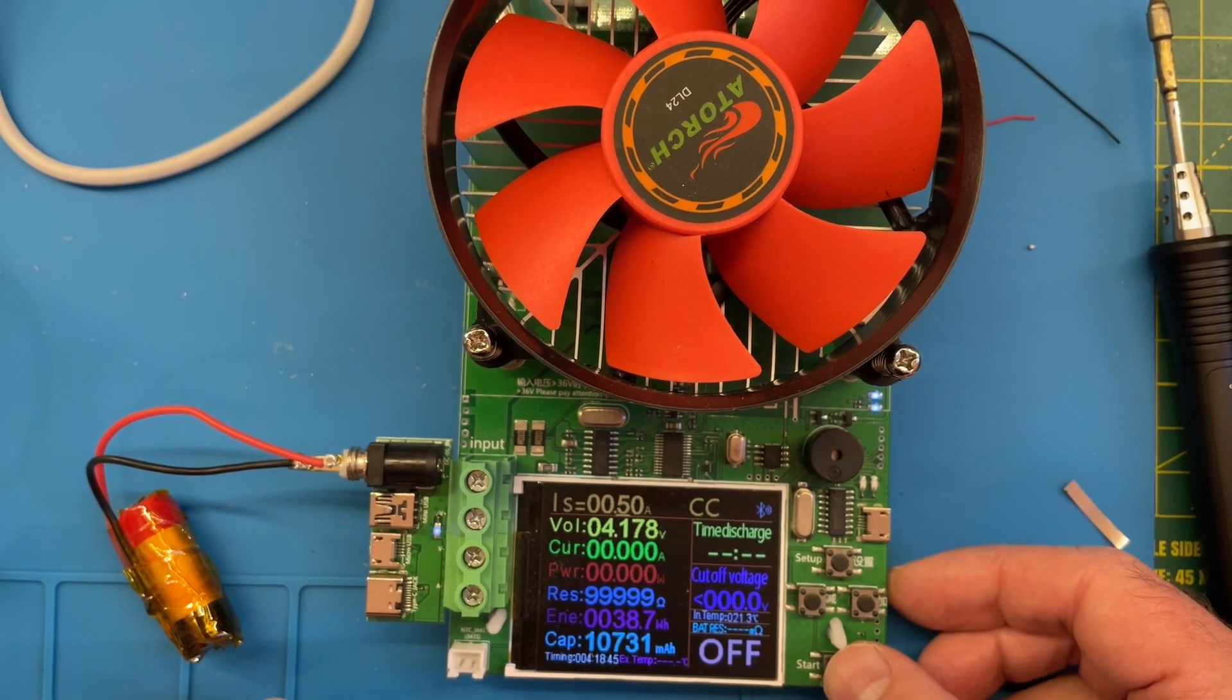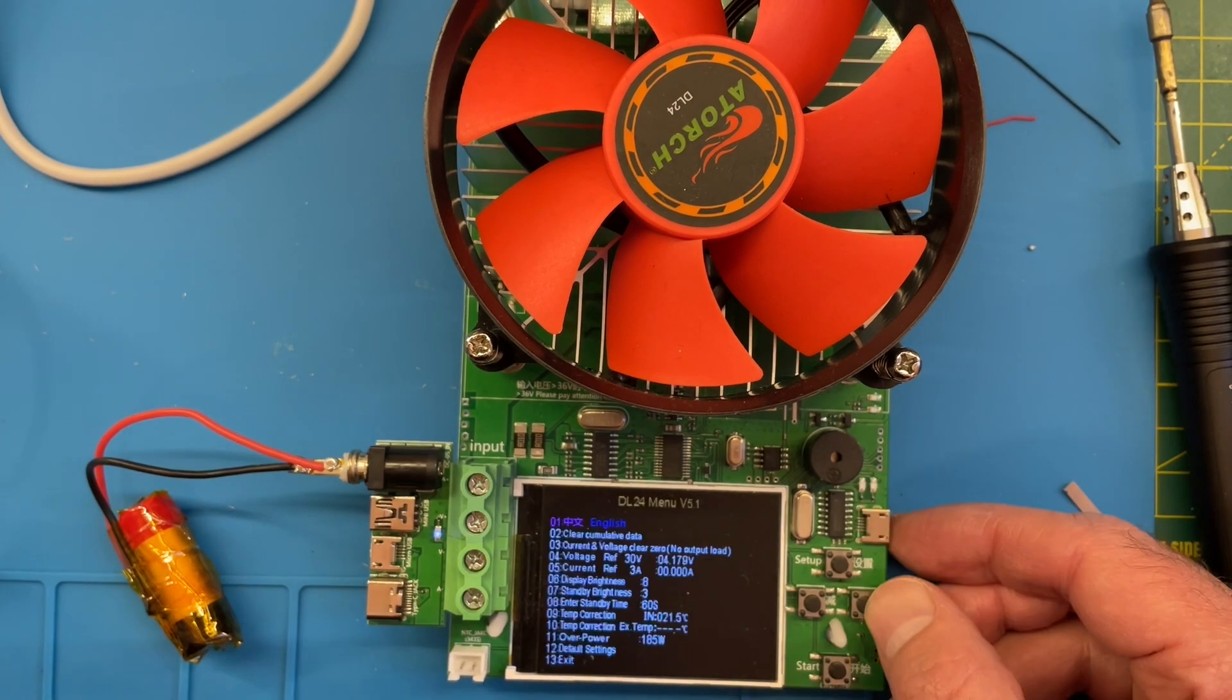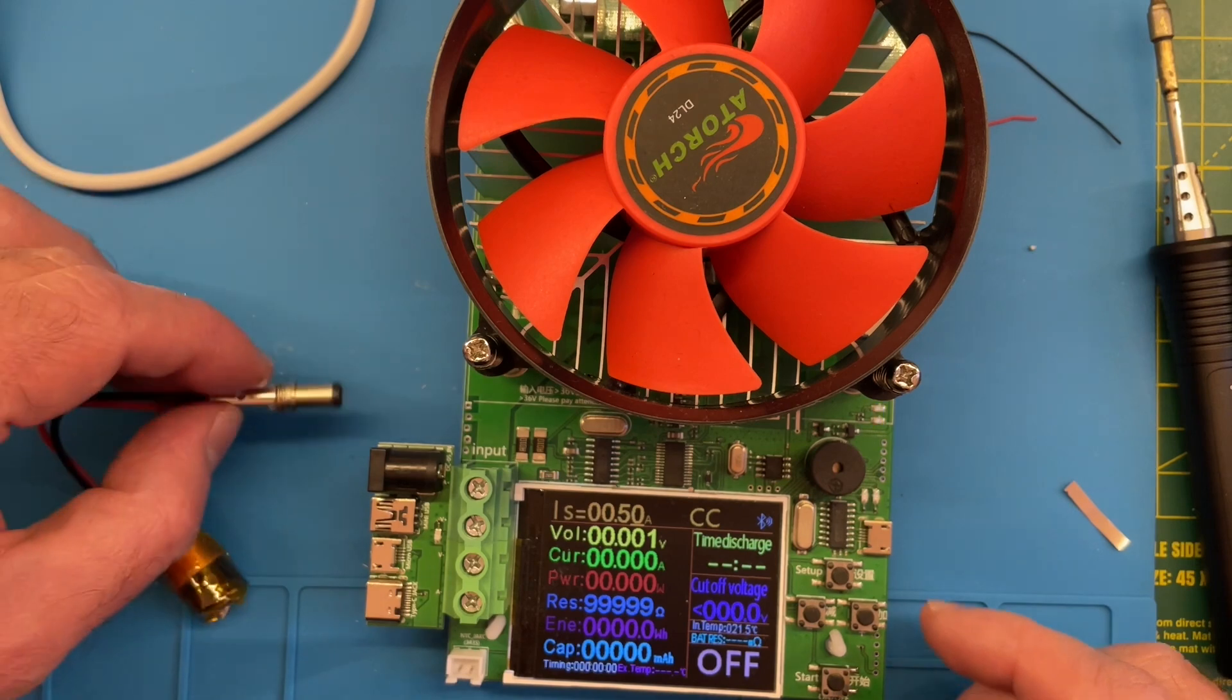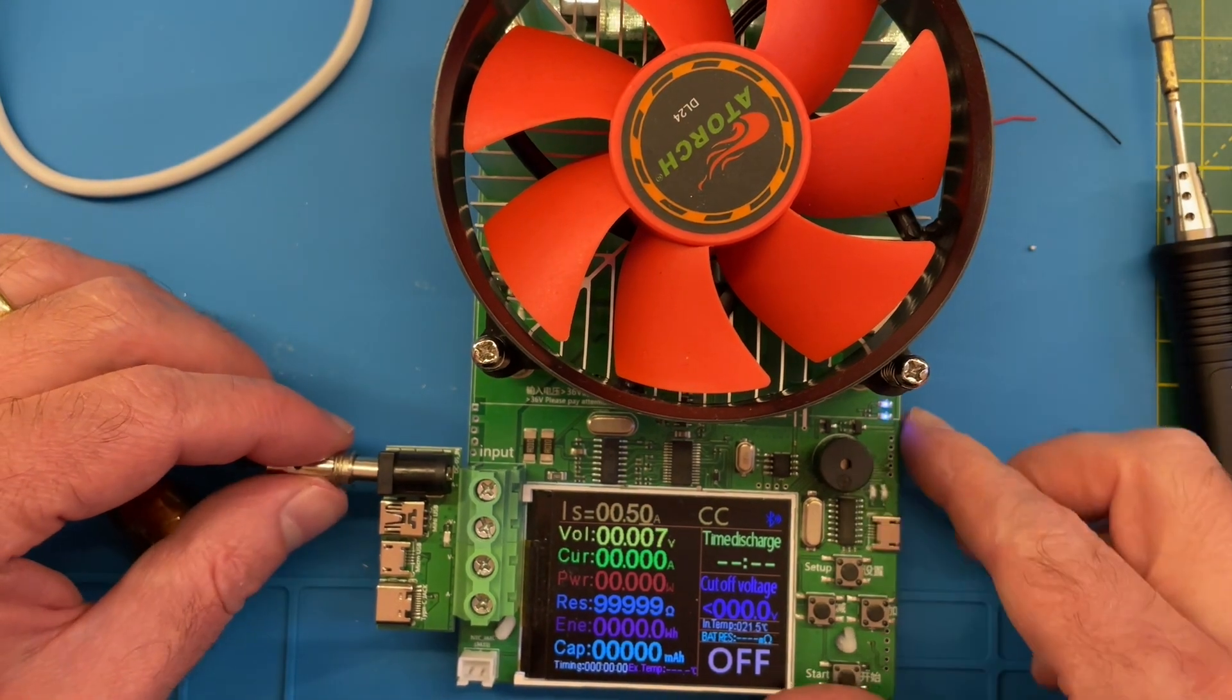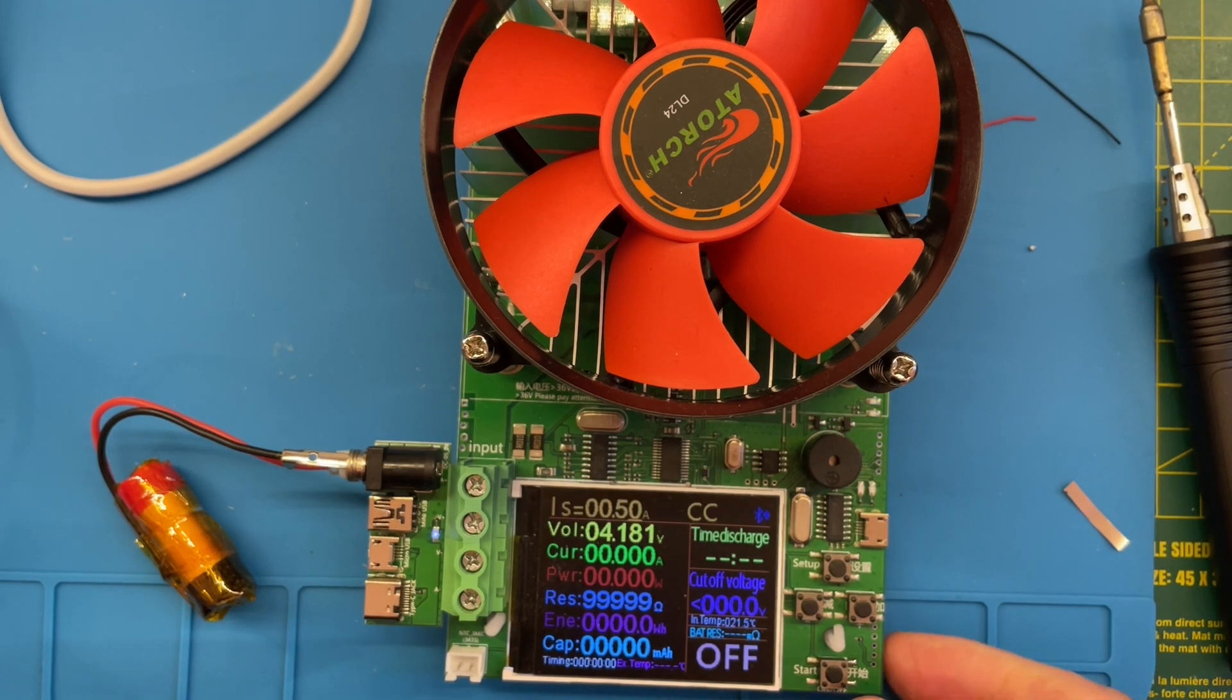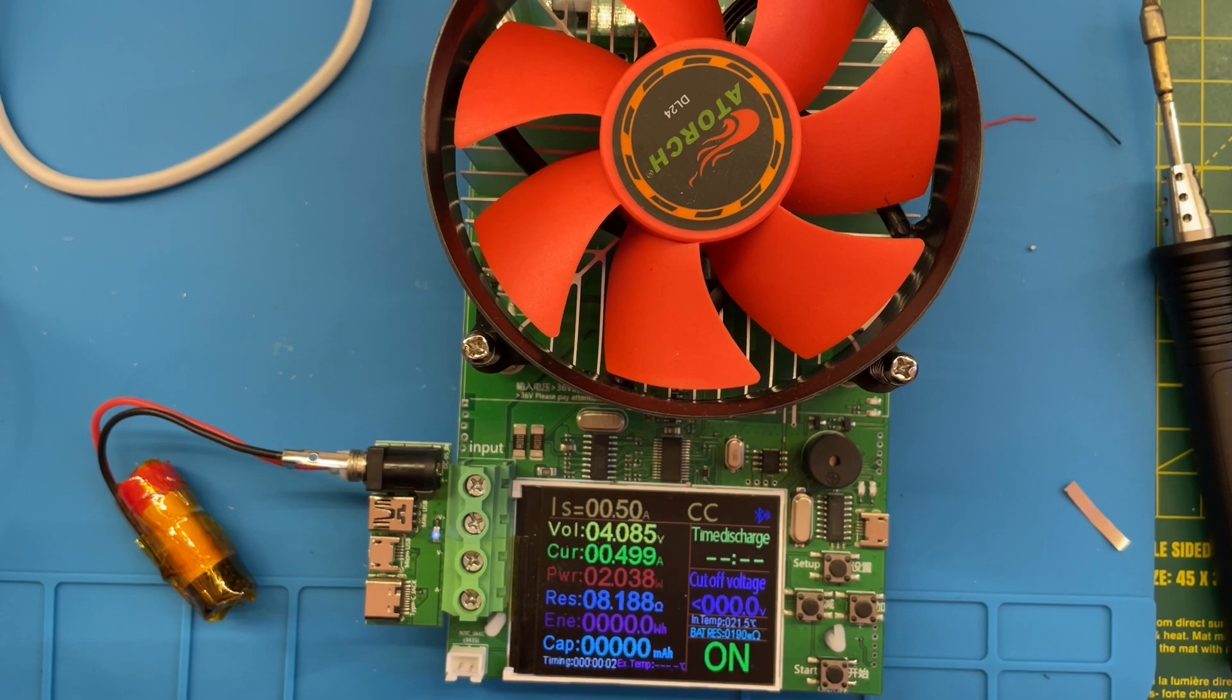Okay, so it turns out you have to remove the input voltage before you can clear it down. So let's try that again. So we'll start the discharge and we'll see how long this battery lasts for and what capacity we get.